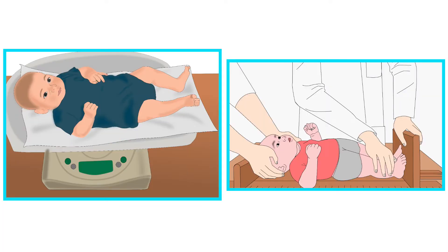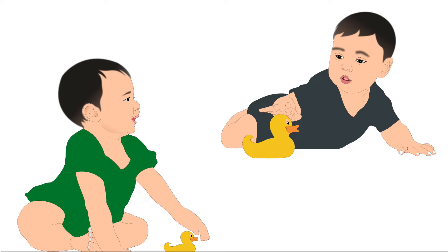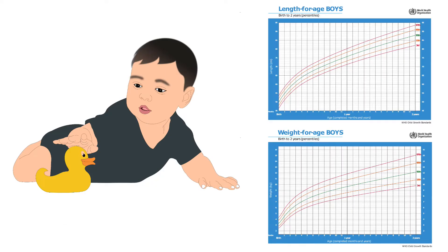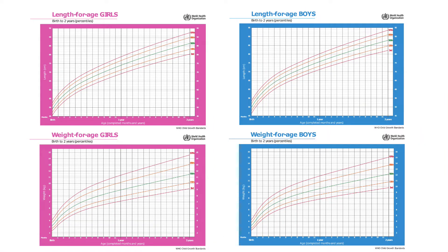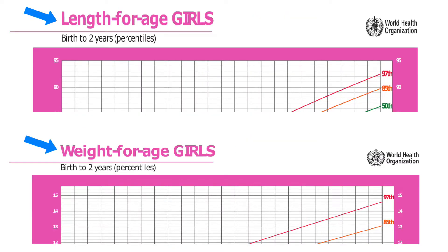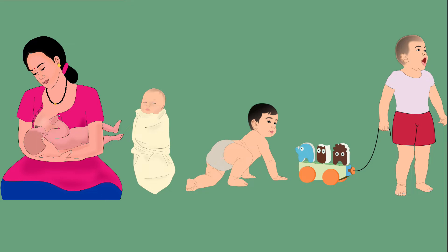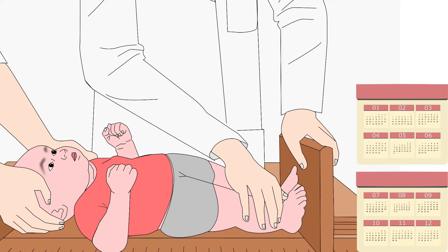The average weight and length for each age and gender were established. Growth charts compare a child's length and weight with other children of the same age and gender, and provide an early warning that a child has a growth problem. Each growth chart is used to measure a specific growth indicator, which is used to assess growth.